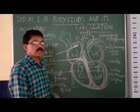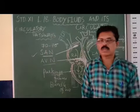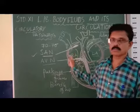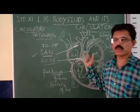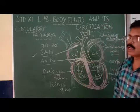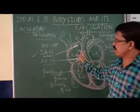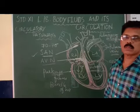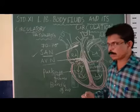The SA Node can generate 70 to 75 times action potential, and that is equal to the number of heart beats — 70 to 75 times. Every time the SA Node generates an action potential, there will be a subsequent heart beat. So 70 to 75 times the SA Node generates action potential, it is equal to 70 to 75 times the heart beat. The generation of the action potential from the SA Node determines how many times the heart beats. So the SA Node is a very important one — it is called the pacemaker of the heart.